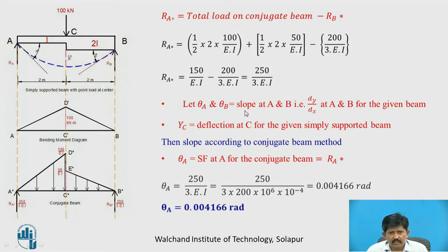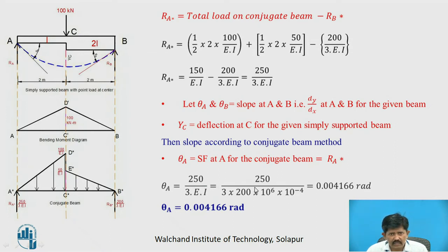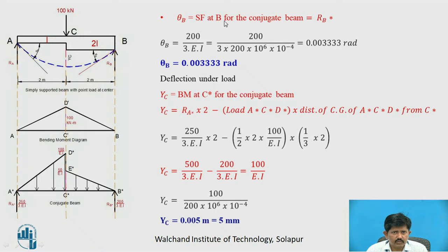Let theta A and theta B be the slopes at A and B, and YC the deflection at C. Theta A equals the shear force at A of the conjugate beam, which equals reaction RA = 250 divided by 3EI. Substituting values of E and I, theta A equals 0.004166 radians. Theta B equals the shear force at B for the conjugate beam, which equals RB = 200 divided by 3EI. Solving, theta B equals 0.00333 radians.